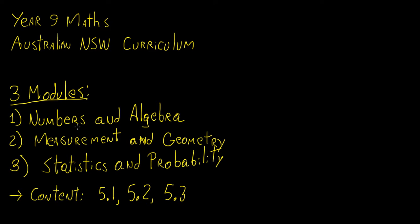The second module is going to be based on measurement and geometry. This one is quite important because geometry is a very big component of the year 10 curriculum. If you go into year 10 mathematics, geometry is also going to be there quite a lot, and this extends all the way to year 11 and 12. So it is quite important to get comfortable with geometry from this point onwards, because it is going to be a very crucial part of all the other mathematics subjects you do in the future.